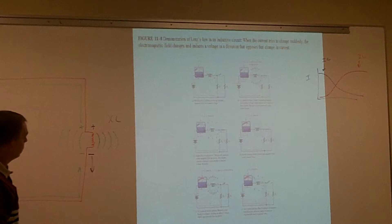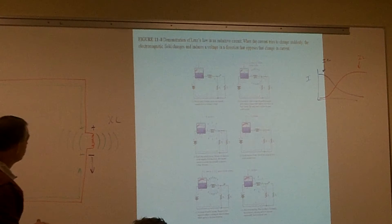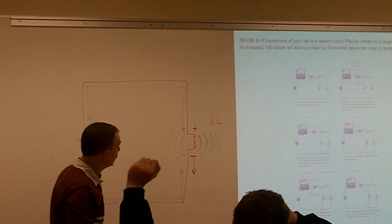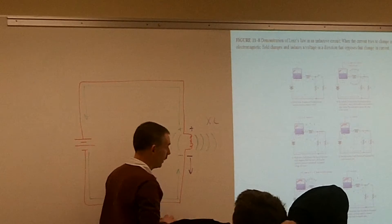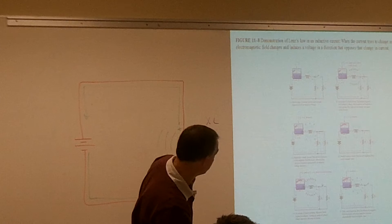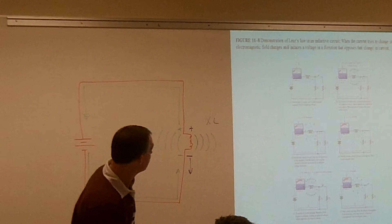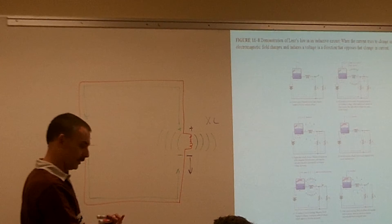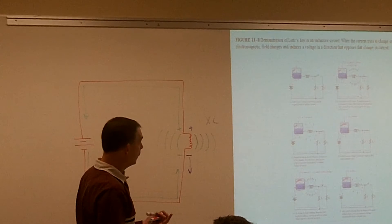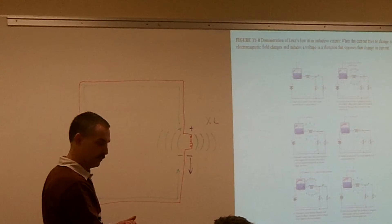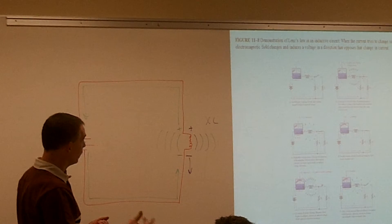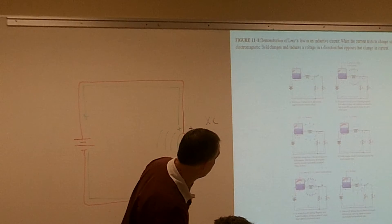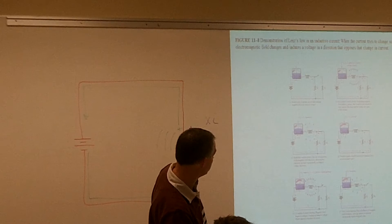Inductors are a little more complicated than capacitors - it's harder to see how it's working with the magnetic lines of flux collapsing. But just always remember: capacitors block DC and allow AC; inductors allow DC and block AC. A capacitor acts like a short when voltage is first applied then acts like an open; an inductor acts like an open and then acts like a short after time.